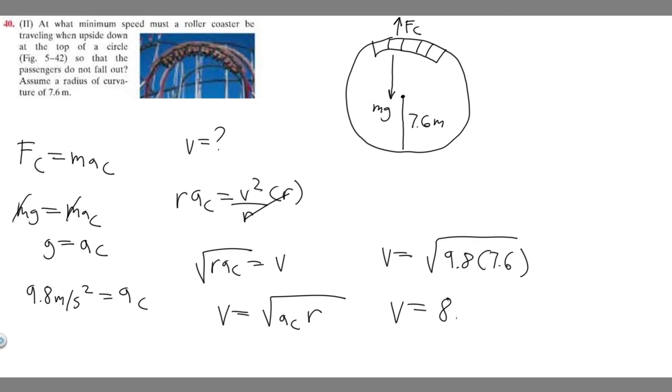Keep in mind, this is velocity, so it's going to be in meters per second. So the velocity is going to be 8.63 meters per second. That's going to be the minimum speed the roller coaster is going to be traveling so they don't fall out. Hopefully you found this useful.